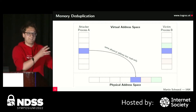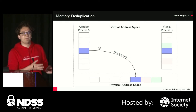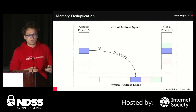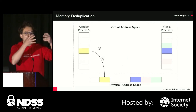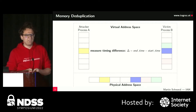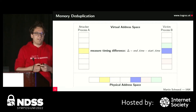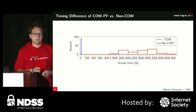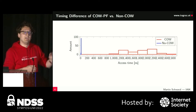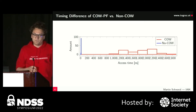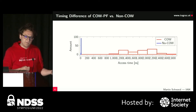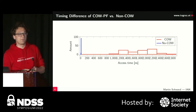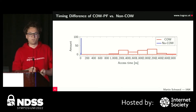What happens if the attacker starts a timer and performs a write operation? There is an optimization called copy-on-write, which first copies the contents and then overwrites them. The attacker measures the timing difference and observes a huge timing difference — around one microsecond for a write on a copy-on-write page — versus only a few nanoseconds for a page not under copy-on-write semantics.